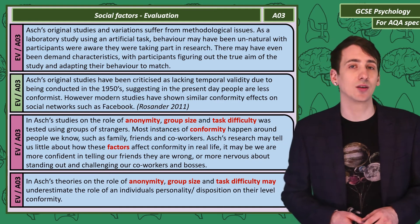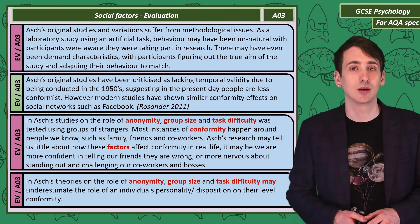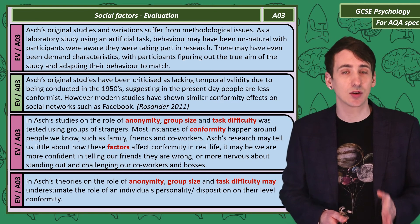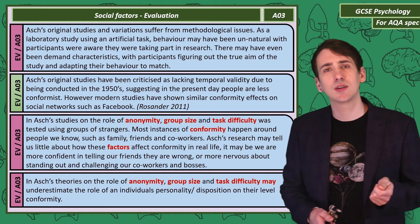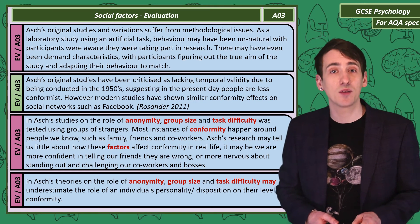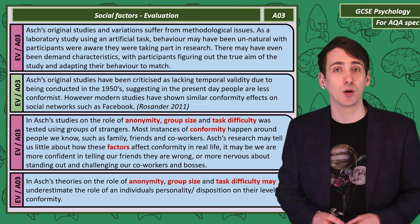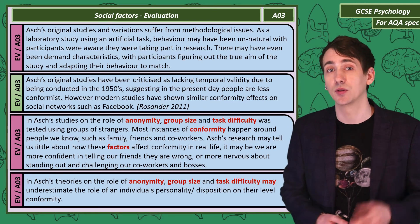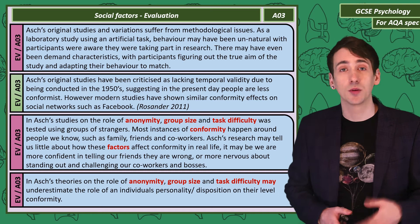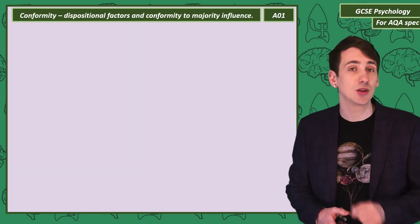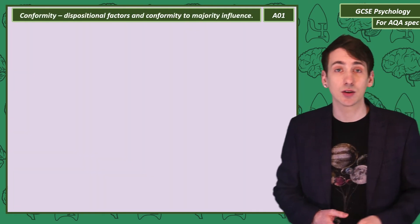Another criticism of Asch is his focus on social factors in conformity. In his original study, people resisted social pressure to conform on 68% of the critical trials, and 25% of people never conformed once. This suggests there might have been aspects of personality that influence conformity. Let's look at disposition in relation to conformity.